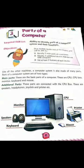There are two parts of a computer system. First is main parts, second is additional parts. Main parts are the basic parts of computer. For example, CPU, CPU box, monitor, keyboard, and mouse.